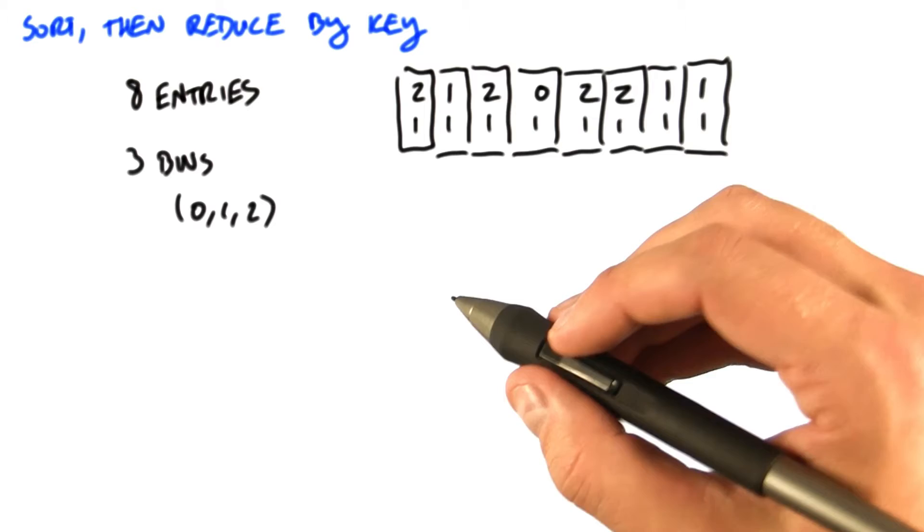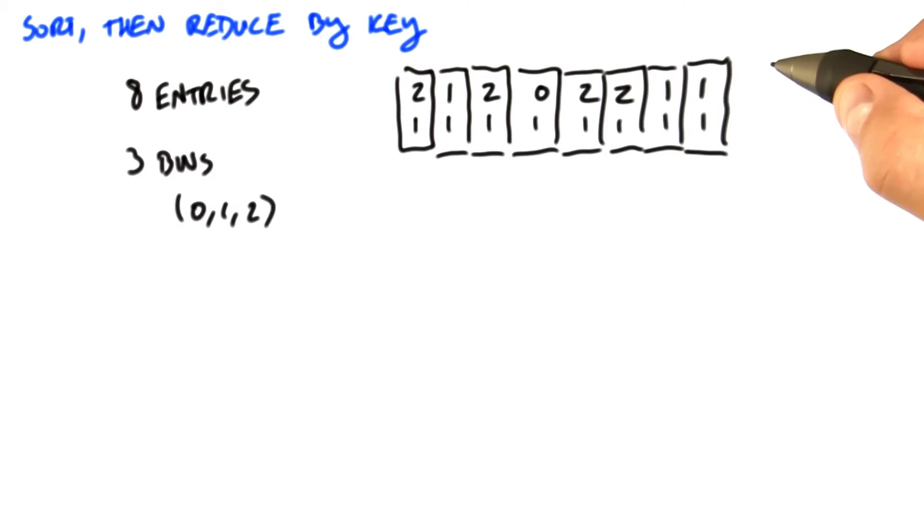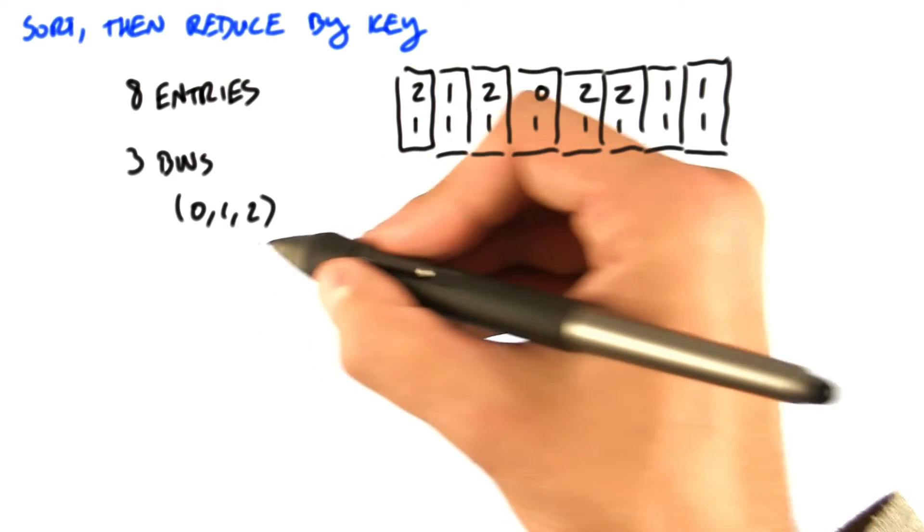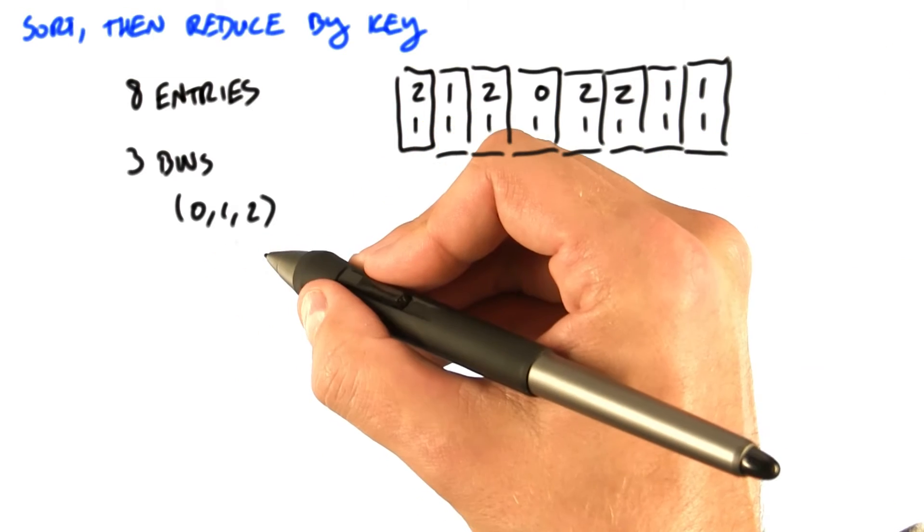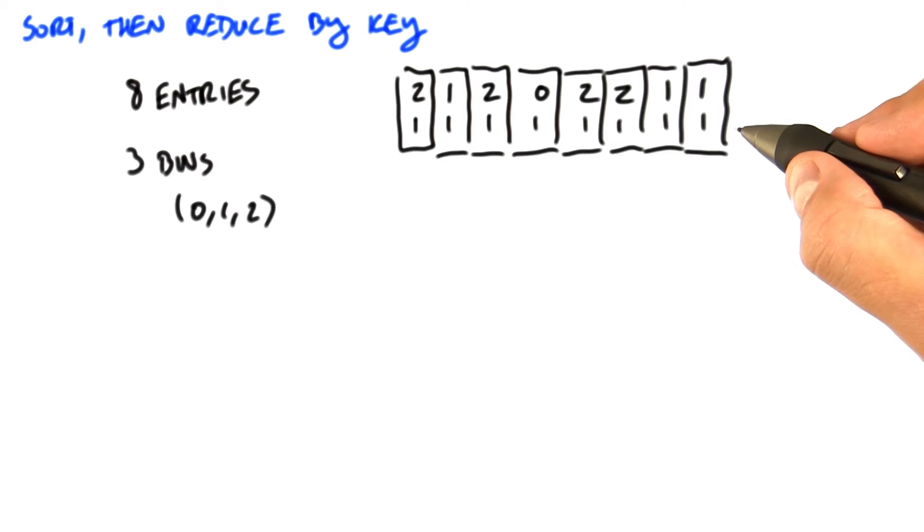Let's think about our entries. Here we have 8 entries as key value pairs. The key is the bin number, and in this example we're going to have 3 bins: 0, 1, and 2, and the value is 1, which we're going to add to each bin.